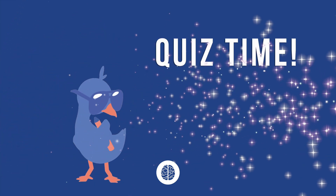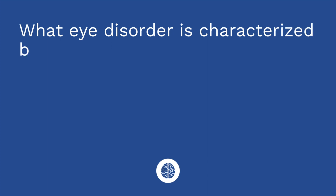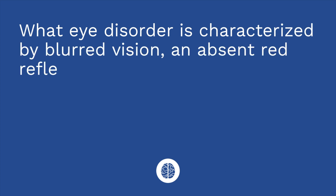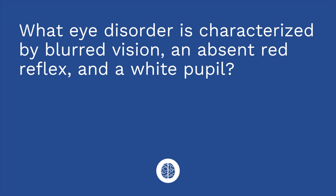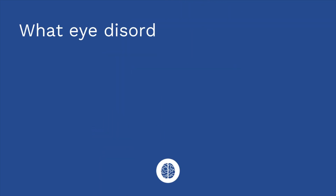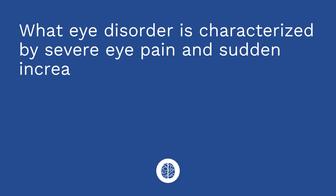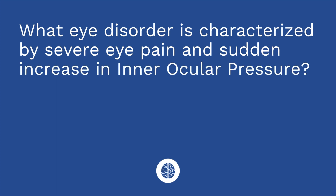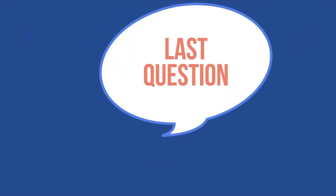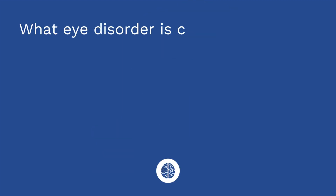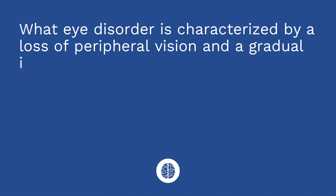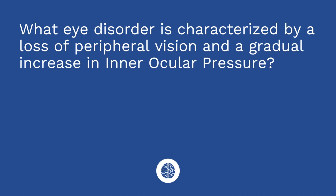It's time for the quiz — I have three questions. First: what eye disorder is characterized by blurred vision, an absent red reflex, and a white pupil? The answer is a cataract. Second: what eye disorder is characterized by severe eye pain and a sudden increase in intraocular pressure? The answer is closed-angle glaucoma. Third: what eye disorder is characterized by loss of peripheral vision and a gradual increase in intraocular pressure? The answer is open-angle glaucoma.